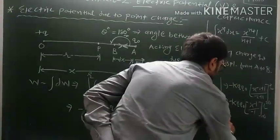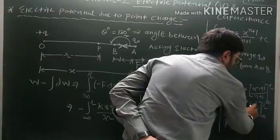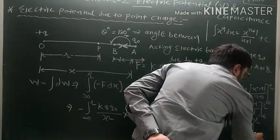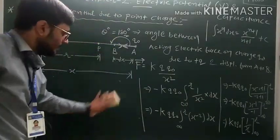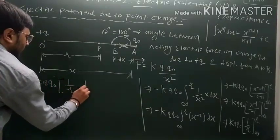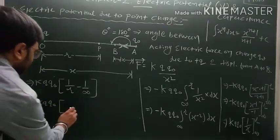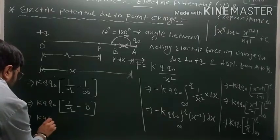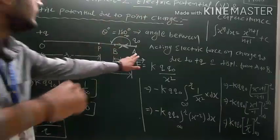Finally we get K·Q·Q₀. Taking upper limit minus lower limit, x^(−1) can be written as 1/x. So we write K·Q·Q₀ times (1/R minus 1/infinity). Since 1/infinity equals 0, we get W equals K·Q·Q₀ upon R as our final work done in moving the charge from infinity to point P.